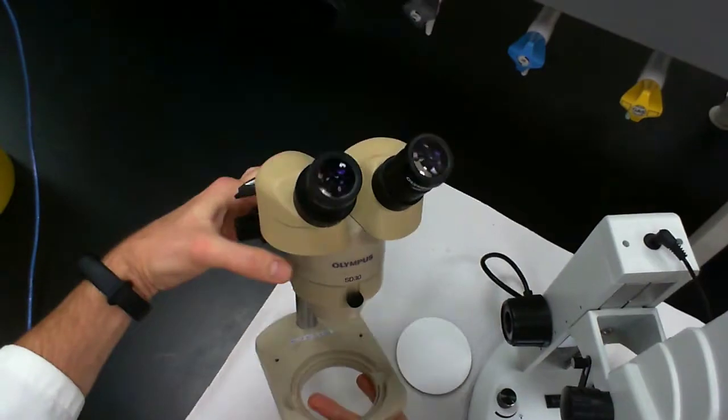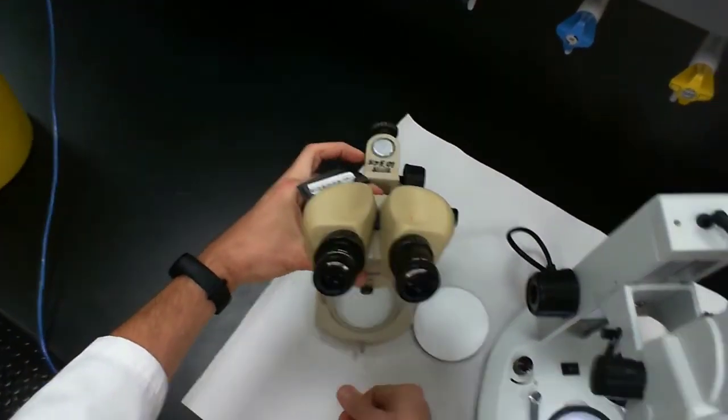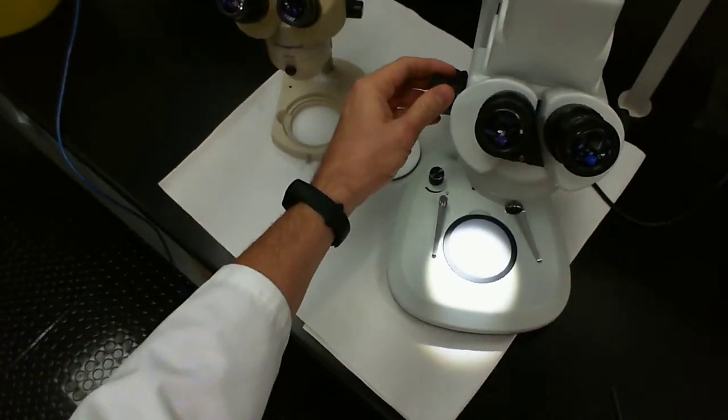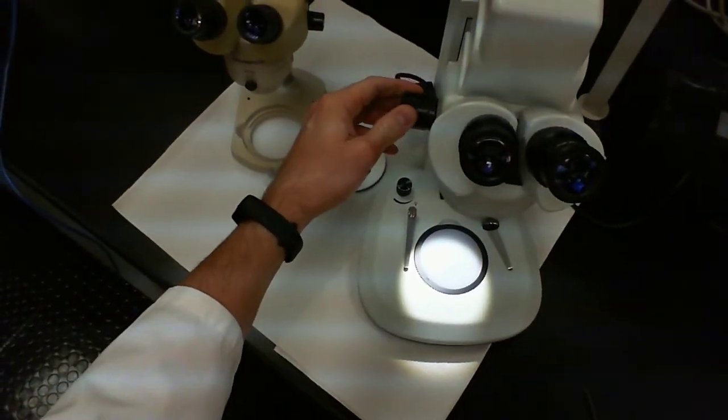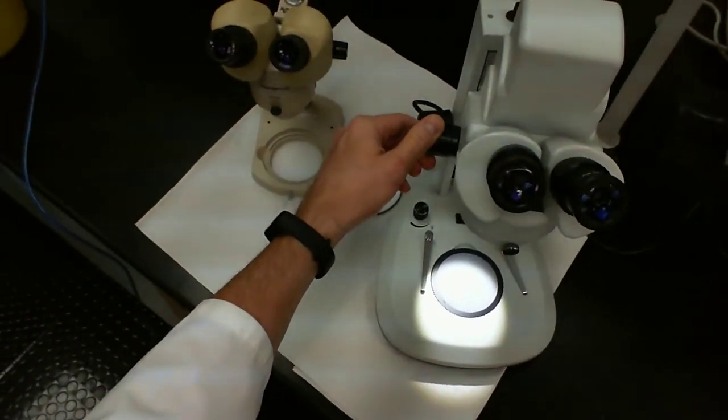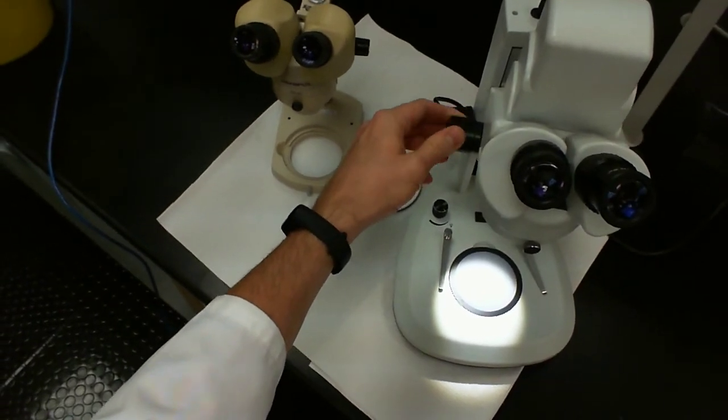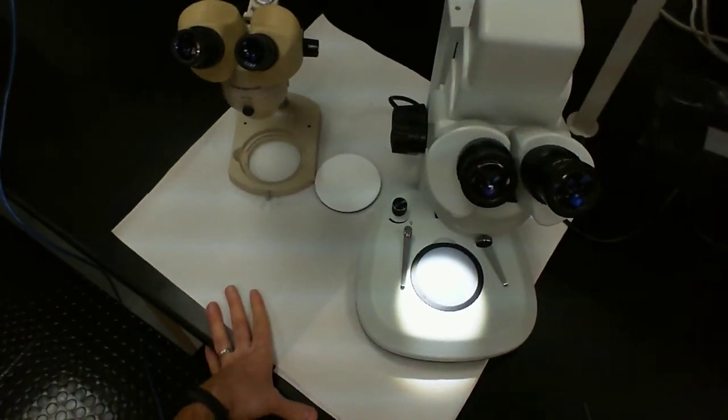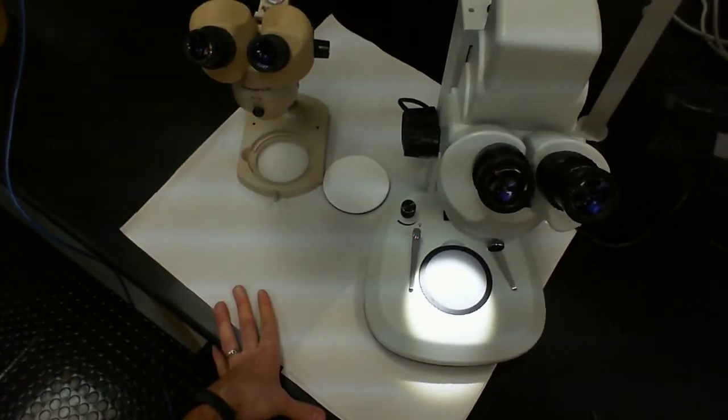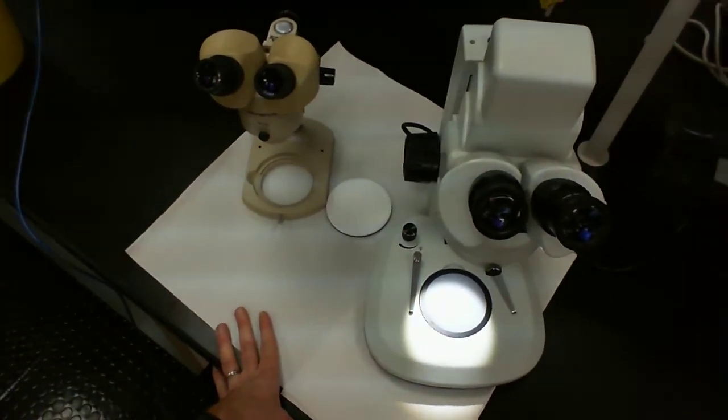The newer microscope has a more fancy system of lenses in place where you have a continuous change in magnification. As you turn this, you can increase or decrease your magnification as you wish. But again, magnification here is not very high with stereo microscopes compared to a compound light microscope.